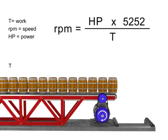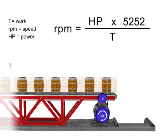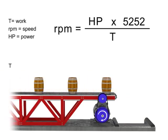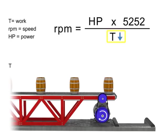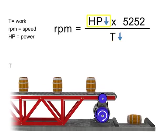Similarly, the opposite is true. If we wish speed to remain constant and decrease torque, then horsepower also decreases.